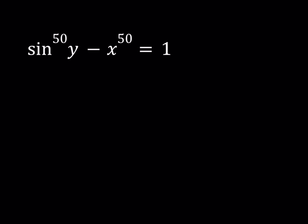We have sin y to the 50th power minus x to the 50th power equals 1, and we're going to be solving for x and y values. Now, what makes this equation really interesting is that first of all it's a 50k special.